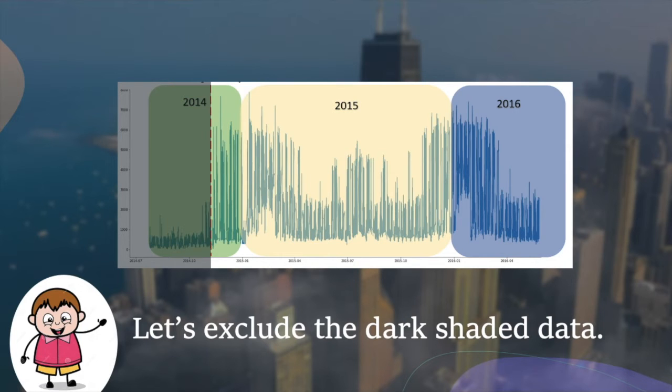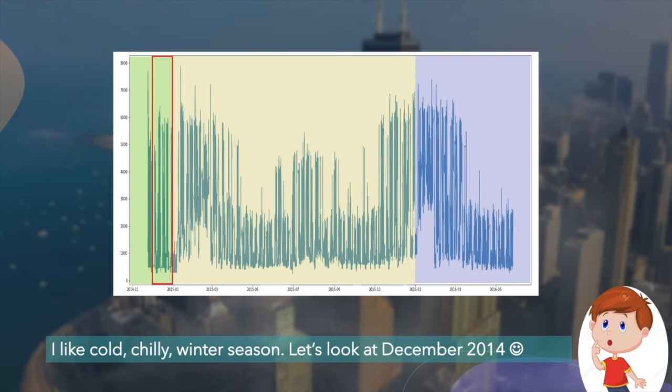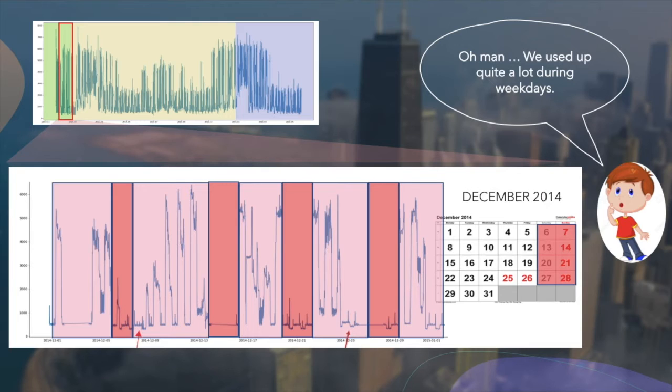Since the data is very large, let us zoom into the December 2014 weekly trend dataset. We can see that the areas shaded in dark highlighting weekends and arrows for public holidays show a pattern of low energy consumption.